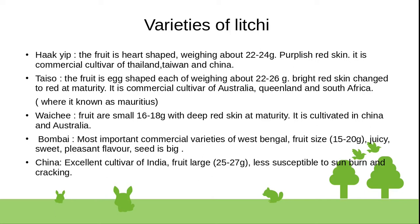Taiso — egg-shaped fruit with weight 22 to 26 grams and bright red skin, changing to red at maturity. It is a commercially important cultivar in Australia, Queensland, and South Africa. It is known as the Mauritius variety.